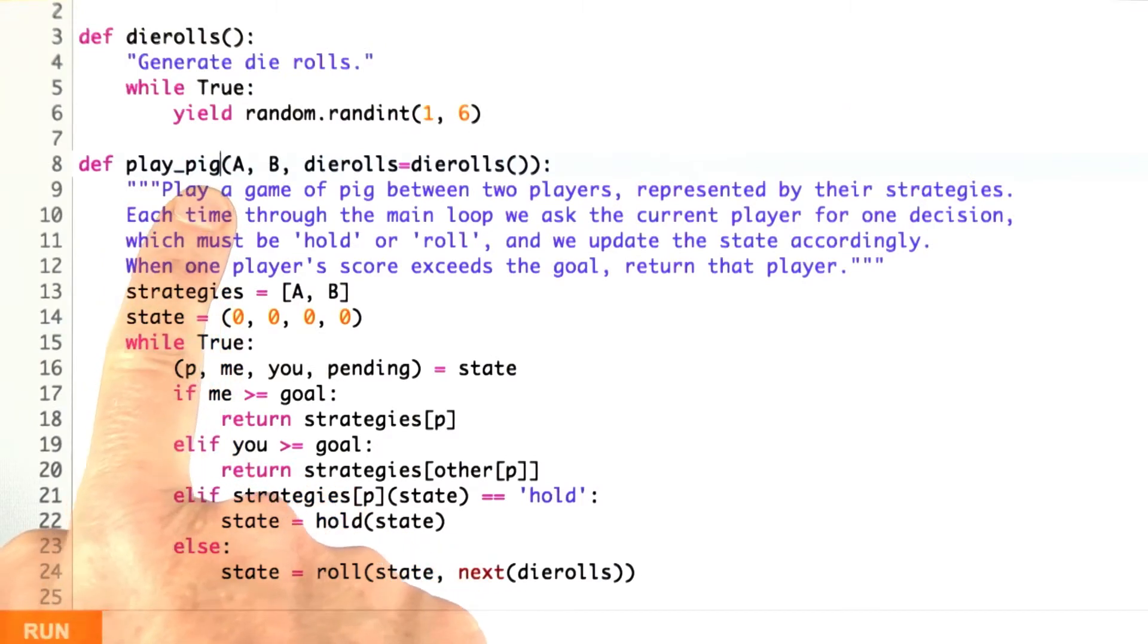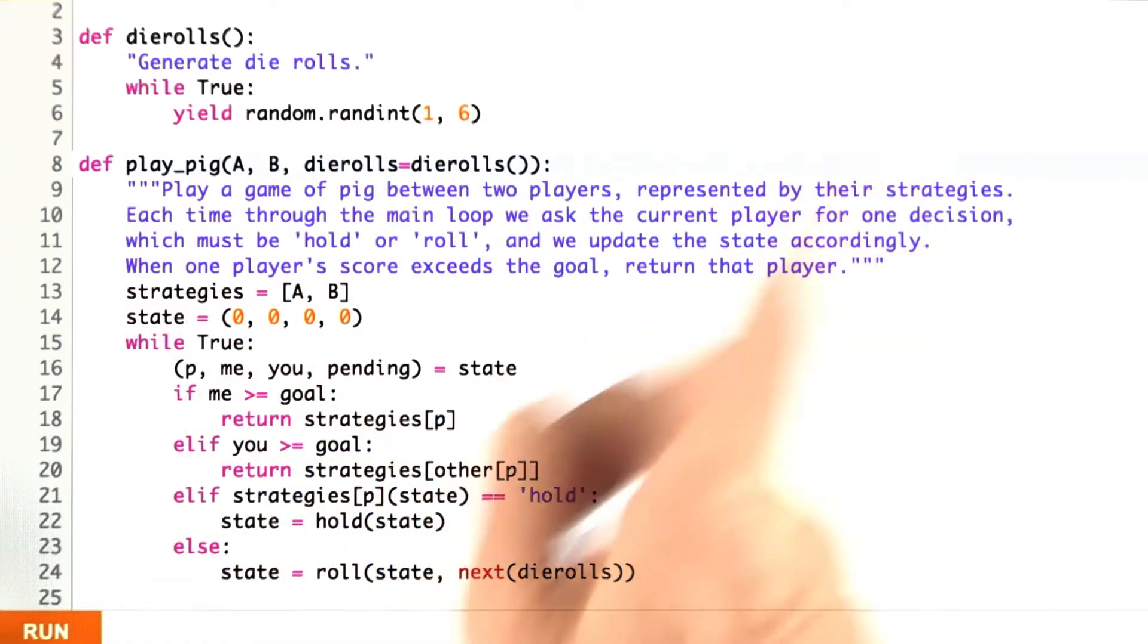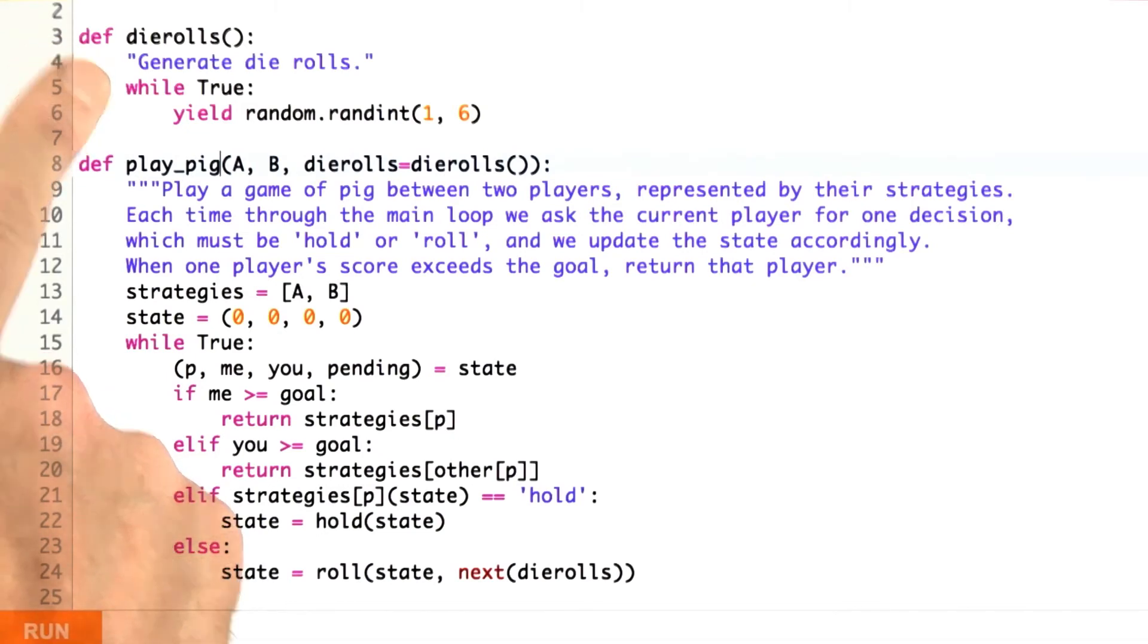So here's my implementation of the dependency injected play pig. I still have the regular arguments a and b. There's an optional argument. If I leave that out, it should behave exactly like it did before, but if I specify it, then I have control over it. Die rolls should be an iterable that generates rolls, and here we go down and we ask for the next one out of those rolls and get it back. By default, die rolls just says we're going to generate an infinite sequence of random integers from 1 to 6.